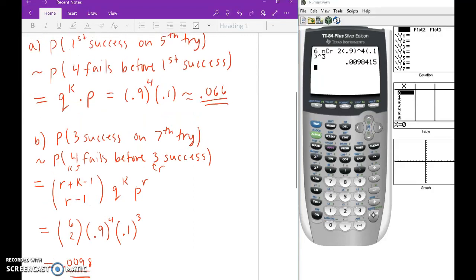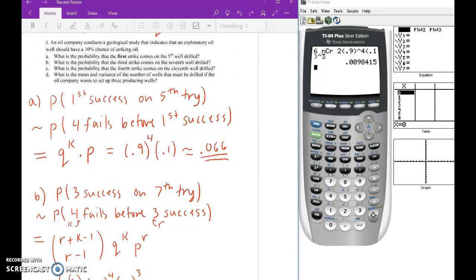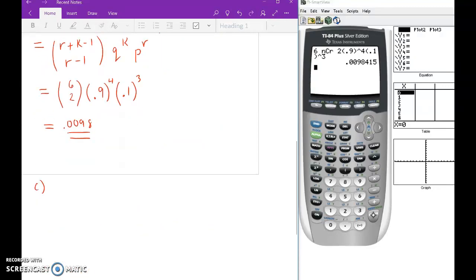Let us see, what's the probability the 4th strike comes on the 11th well-drilled? All right, so let us see, the probability the 4th success is on the 11th try. All right, well, that's similar to the probability. Well, if the 4th win happens on the 11th try, that means that there were 7 losses, right? So 7 losses before the 4th win. So 7 fails before the 4th success.